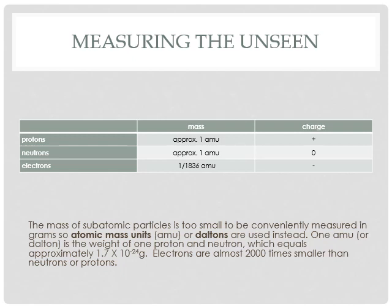It's so small it's almost incomprehensibly tiny. And going even smaller, you have the electron. Protons and neutrons each weigh one atomic mass unit. Electrons weigh 1/1,836 of an AMU. So one electron is almost 2,000 times smaller than a proton or a neutron.